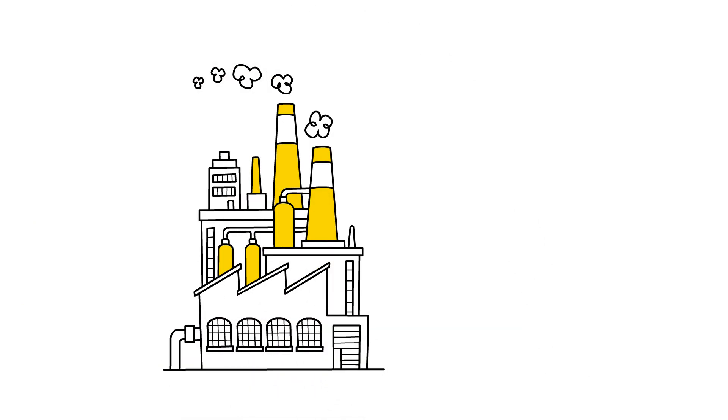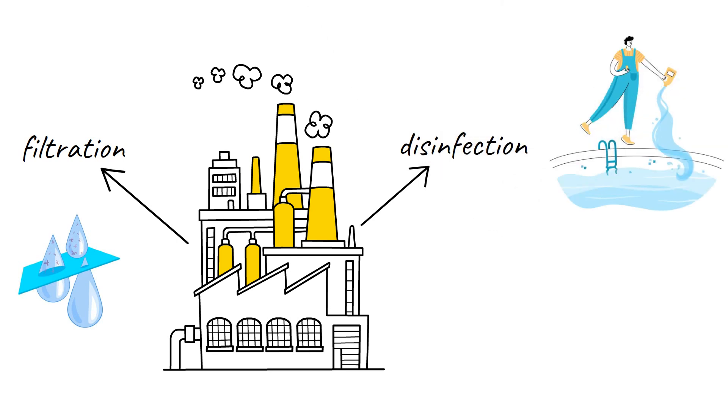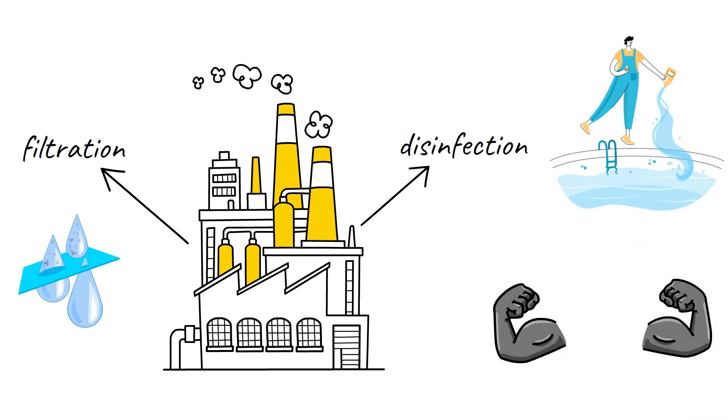Of course, there are water treatment plants that exist to try and clean up this wastewater. They use methods like filtration to remove big chunks of waste, or disinfection where they add cleaning chemicals just like the chlorine we put in our swimming pools. However, despite all of this, some chemicals in wastewater are very hard to remove and still make it out to be dumped into lakes and rivers.